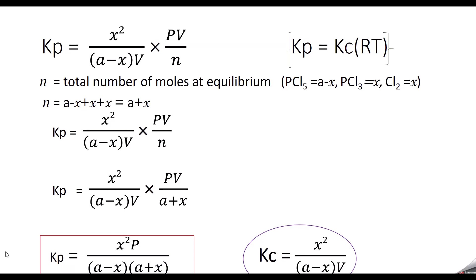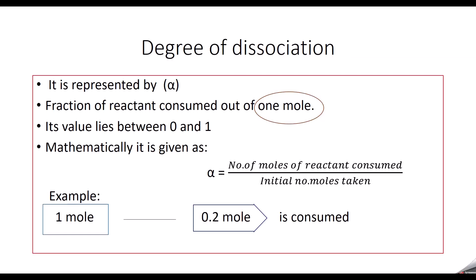We have derived Kc and Kp for the dissociation of PCl5. Next, we will go to the degree of dissociation. The degree of dissociation is the fraction of the reactant consumed out of one mole — how much of the reactant is consumed out of one mole. It is represented by the letter alpha.